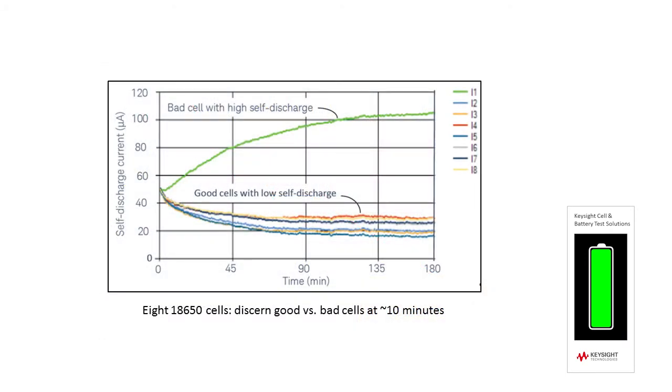In many applications, such as cell manufacturing tests, you are less interested in measuring the stable self-discharge current value than in quickly discerning good versus bad cells for their self-discharge characteristics. Commercially available potentiostatic systems can make this distinction in just a few minutes.